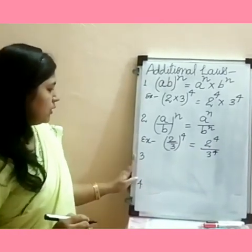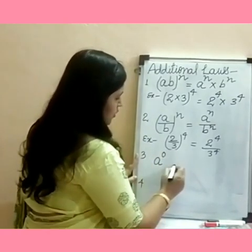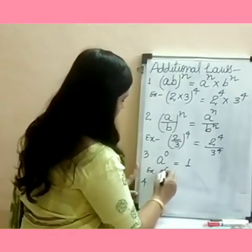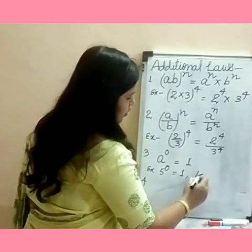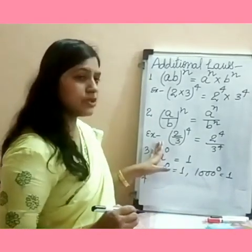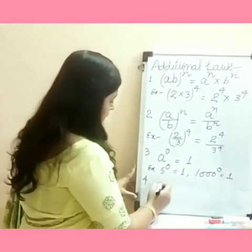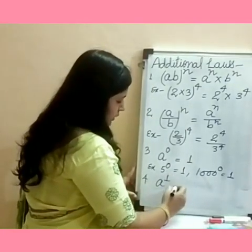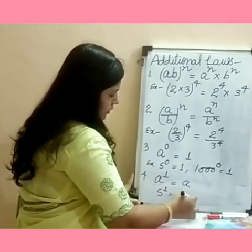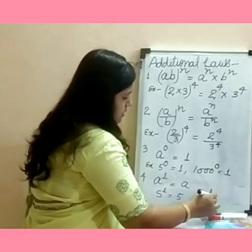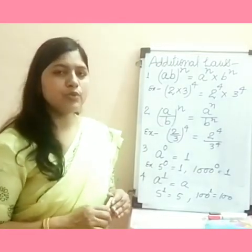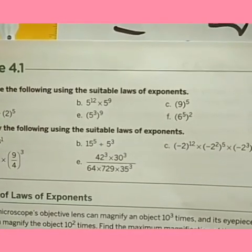The second additional law: if two different numbers are divided and have the same power — a raised to the power n divided by b raised to the power n — equals (a/b) raised to the power n. For example, (2/3) raised to the power 4 equals 2 raised to the power 4 divided by 3 raised to the power 4. Also: any number raised to the power 0 equals 1 — for example, 5^0 = 1 or 1000^0 = 1. And any number raised to the power 1 equals the number itself — 5^1 = 5, 100^1 = 100.